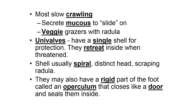Gastropods are slow-moving and crawl. They secrete a special mucus to slide on, and they are typically veggie grazers using their radula to scrape vegetation. They are considered univalves — uni meaning one — so they have a single shell for protection that they can retreat inside of. The shell is usually spiral. They have a distinct head and their scraping radula, and they may also have a rigid part of their foot called an operculum that they can close like a door to seal themselves inside.